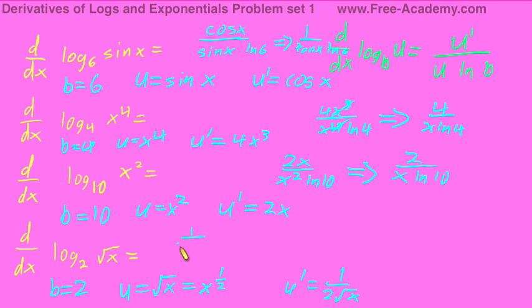1 over 2 root x divided by the square root of x times ln of 2. We're going to multiply by the reciprocal of the bottom in order to simplify this. So, 1 over 2 root x times 1 over root x ln of 2. Square root of x times square root of x equals x. So, we get 1 over 2x ln of 2.